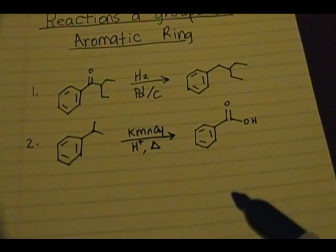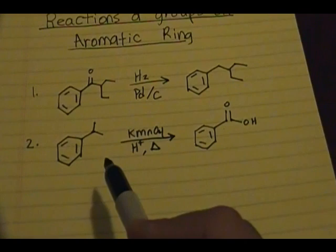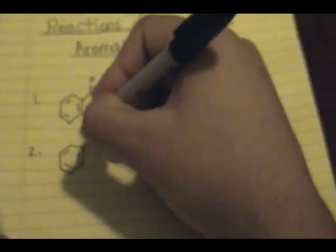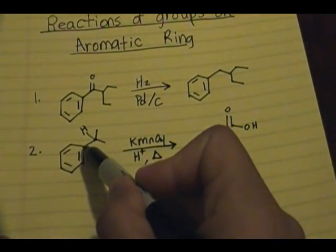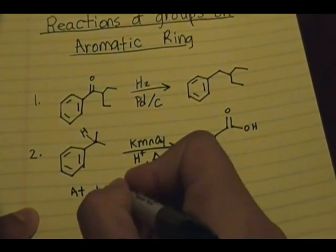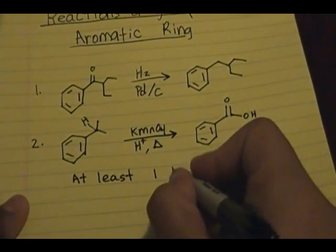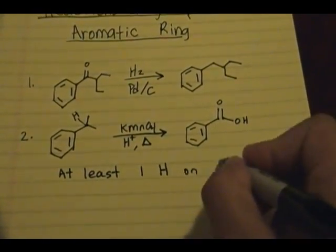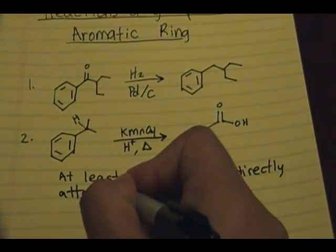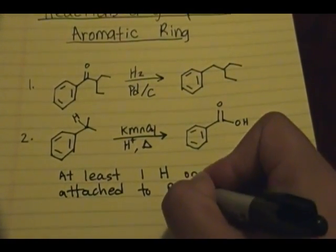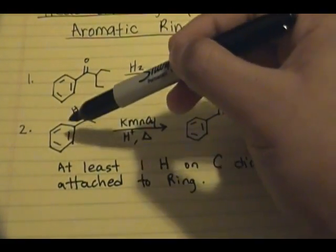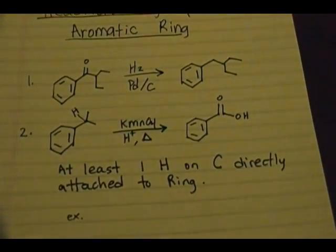There are some rules you need to be aware of. This reaction only occurs if you have at least one hydrogen present on the carbon directly attached to the aromatic system. For the isopropyl example, there is at least one hydrogen on the carbon directly attached to the ring, so the reaction will occur. You need at least one H on the carbon directly attached to the ring.